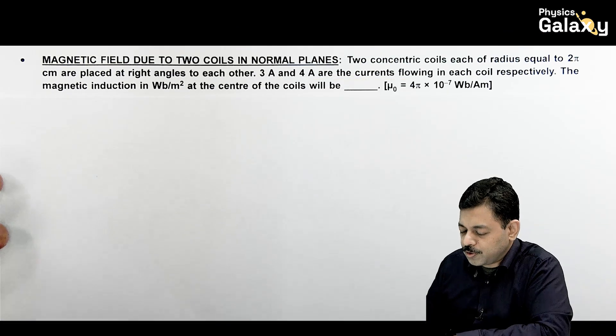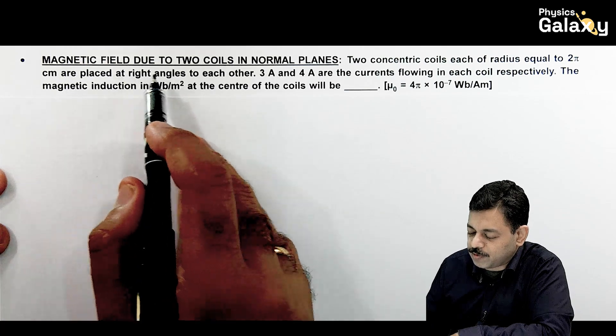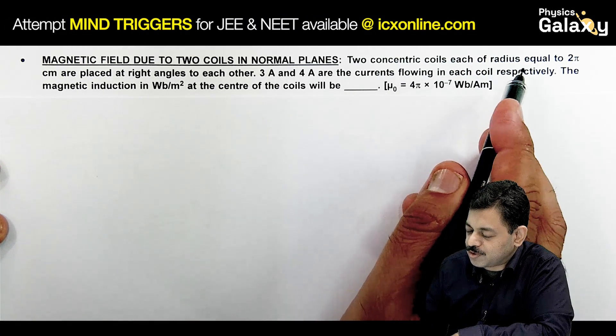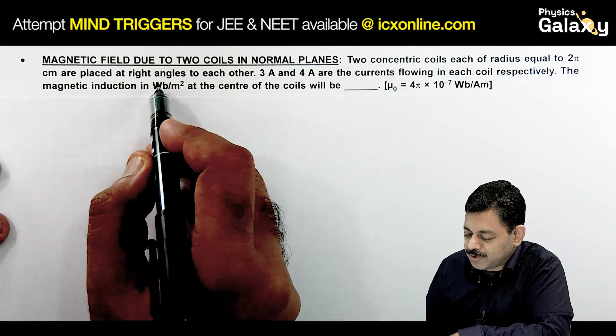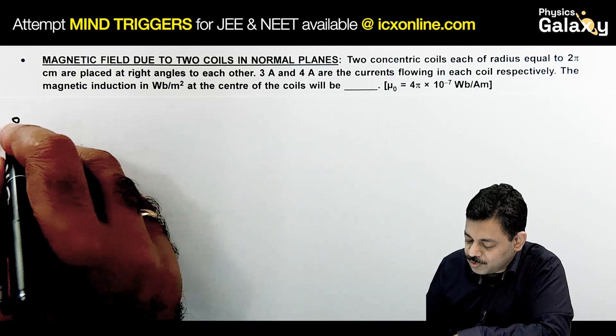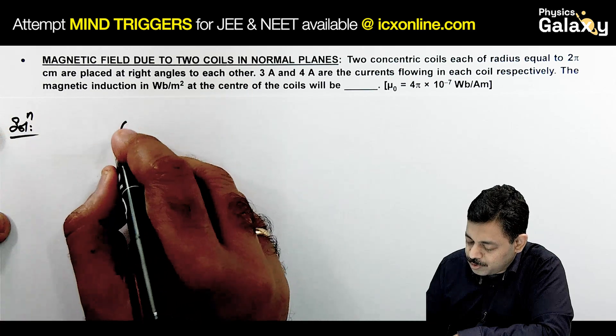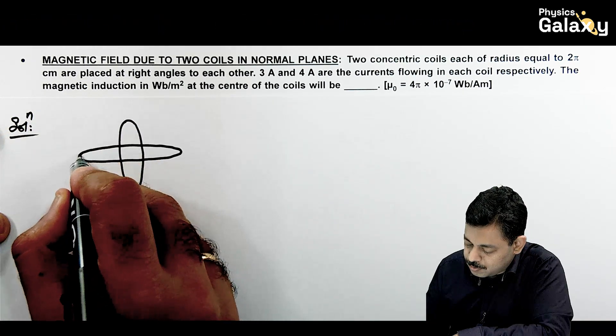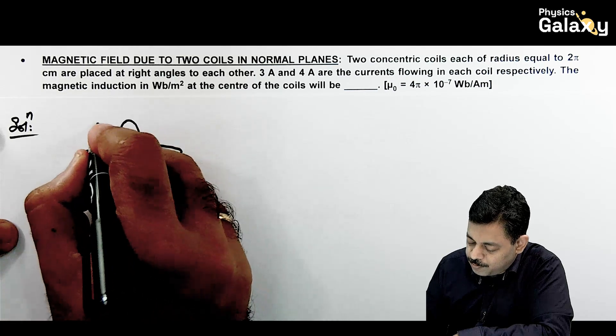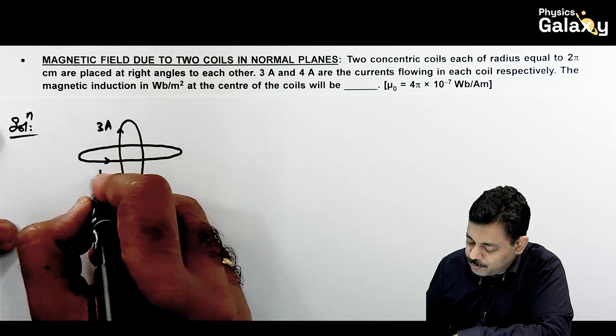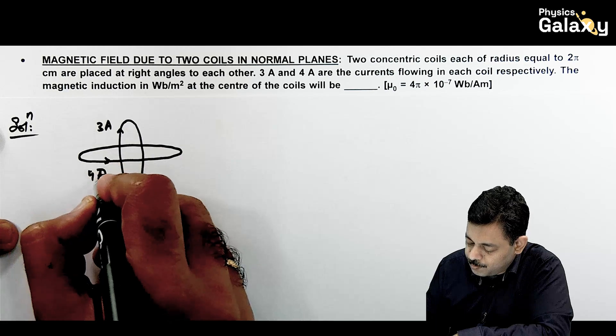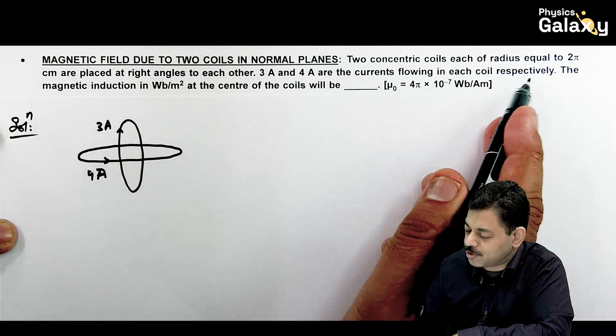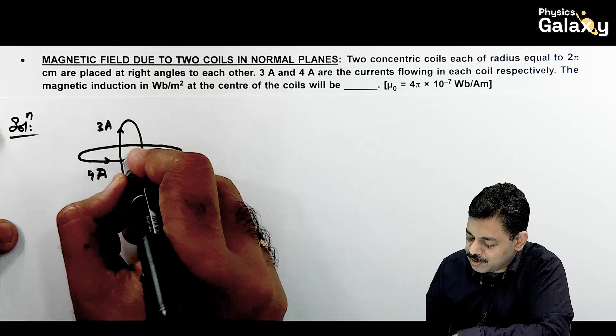Another case is magnetic field due to two coils in normal planes. Two concentric coils each of radius equal to 2 pi centimeter are placed at right angle to each other. The situation is like this: there are two coils, one is this, another is this. One has current flowing of 3 ampere, second has current flowing of 4 ampere.